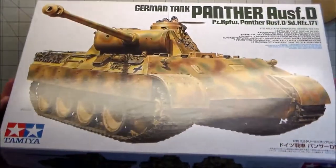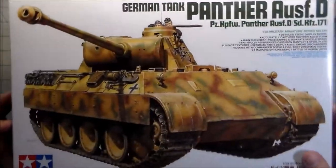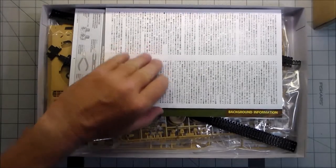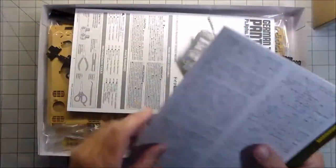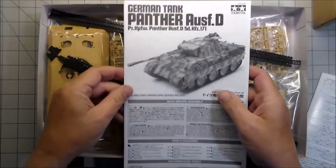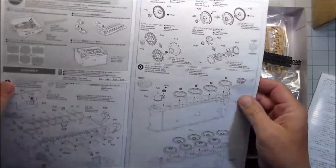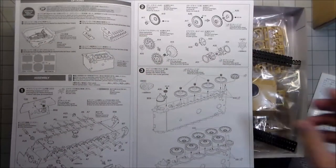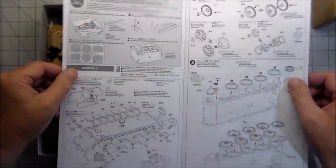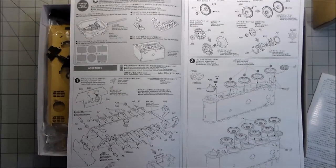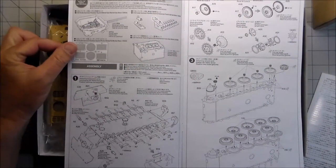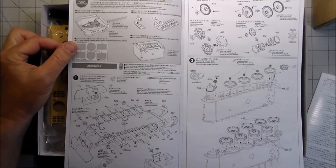First thing, we got the typical Tamiya box art. I think it's been the same type of box art for 40 years. In the box, typical stuff - we got the instruction booklets. It's nice because it's in a booklet form, it's not the big long map fold-out type deal.